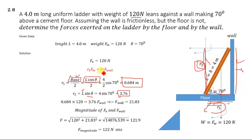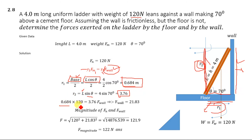Now that we know r1 and r2, we apply T_g = T_wall, which gives r1 × F_m = r2 × F_wall. Solving for F_wall: F_wall = (r1 × F_m) / r2. Substituting r1 = 0.684 m, F_m = 120 Newton, and r2 = 3.76 m, we get F_wall = 21.83 Newton. This is the force exerted on the ladder by the wall.